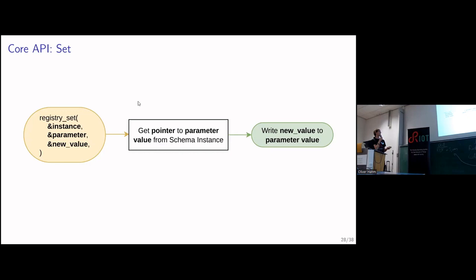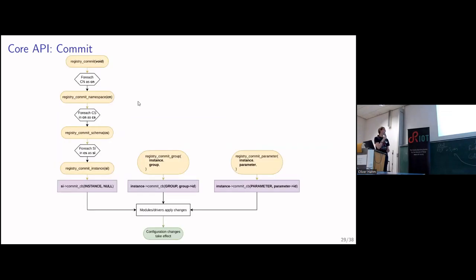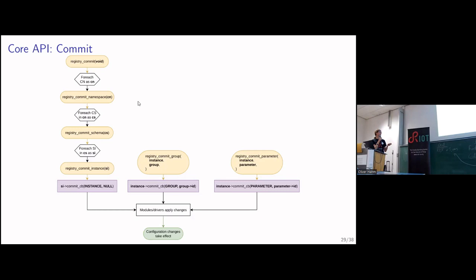The set function is pretty much the same, except you're providing your value and it's ready to be applied later. The commit function — all the yellow boxes represent registry API functions — you can call them from different levels in the tree. For example, if you want to commit your full registry, you call registry commit, which calls registry commit namespace for every existing namespace, then registry commit schema for each schema, and so on until registry commit instance. The commit callback can differentiate between instance, group, or parameter level, and depending on what it is, will call the commit function with the given information.